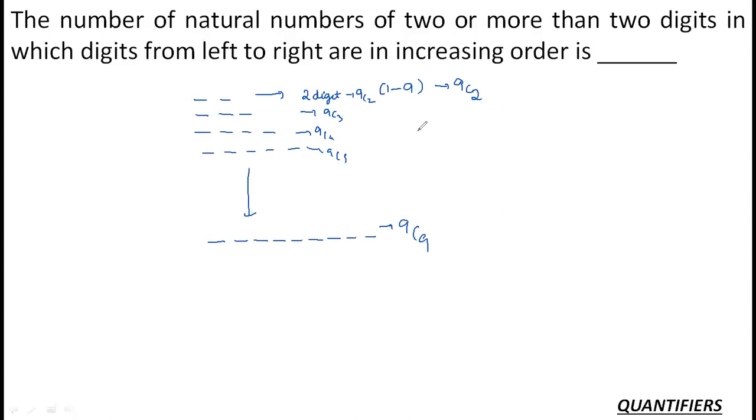What do I need to find? I need to find the sum: 9C2 plus 9C3 plus 9C4 up to 9C9. Let's take the sum. These are my total possibilities of the numbers of two digits or greater than two digits.